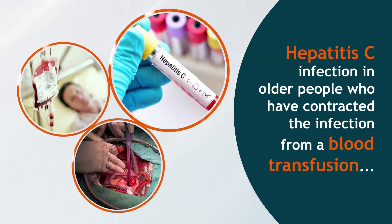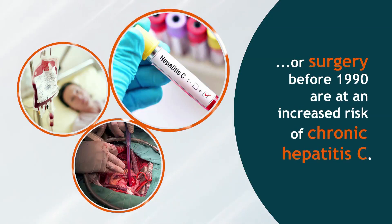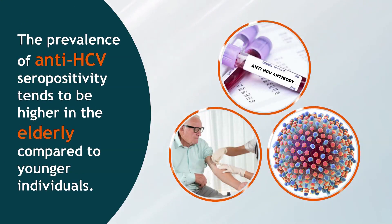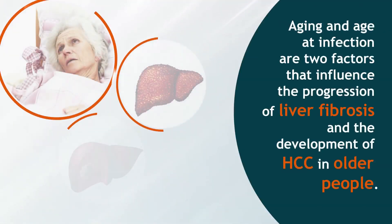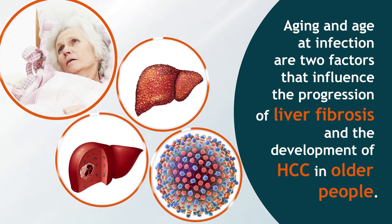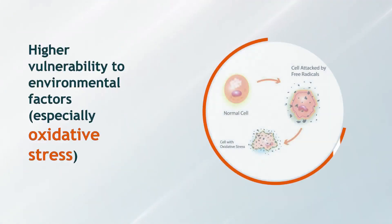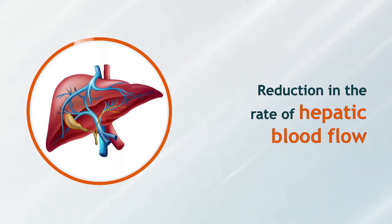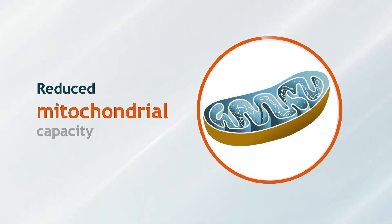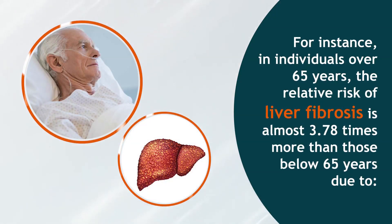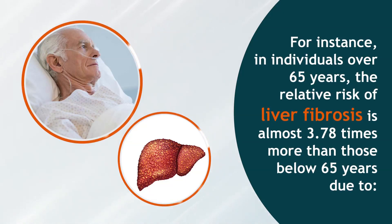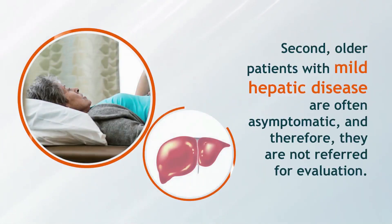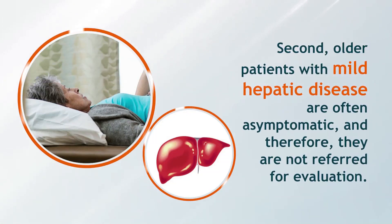Hepatitis C: Age is an important factor when treating chronic HCV infection. Older people who contracted the infection from a blood transfusion or surgery before 1990 are at an increased risk of chronic hepatitis C. The prevalence of anti-HCV seropositivity tends to be higher in the elderly compared to younger individuals. Aging and age at infection are two factors influencing progression of liver fibrosis and development of HCC. Other possible factors include higher vulnerability to oxidative stress, reduction in hepatic blood flow, and reduced mitochondrial capacity. In individuals over 65 years, the relative risk of liver fibrosis is almost 3.78 times more than those below 65 years.